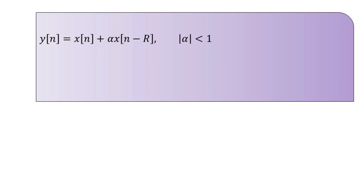The equivalent transfer function representation for the FIR filter is H(z) = 1 + α·z^(−R). The delay parameter R represents the time the sound wave takes to travel from the sound source to the listener after bouncing back from the reflecting walls. The parameter alpha represents the sound loss caused by the propagation and the corresponding reflection.